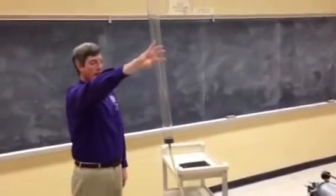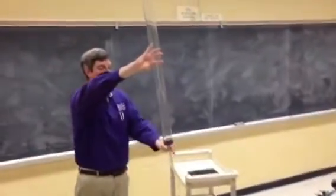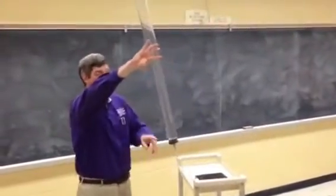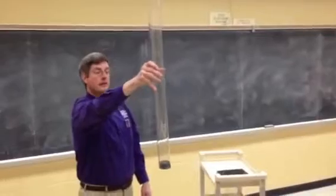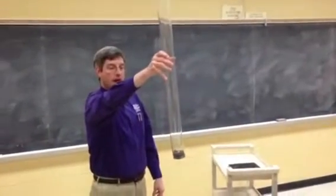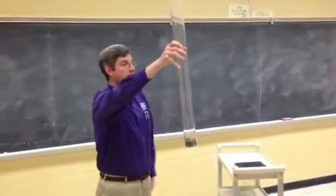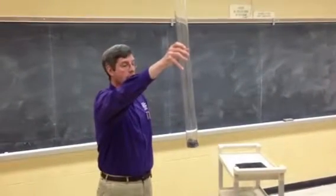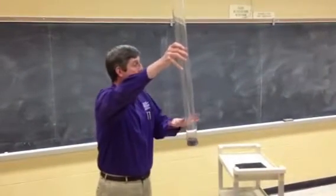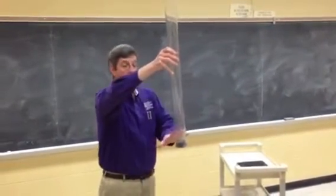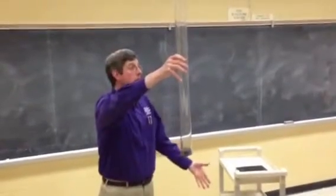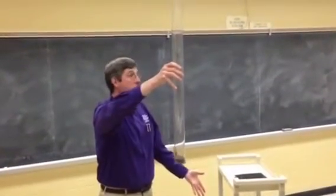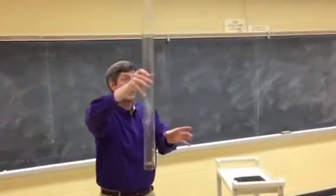So you've got a tube, and it's got atmospheric air on the inside. When you invert it, you've got a coin and a feather. They're both about the same size, so the air drag on them is going to be similar because of the cross-sectional area.